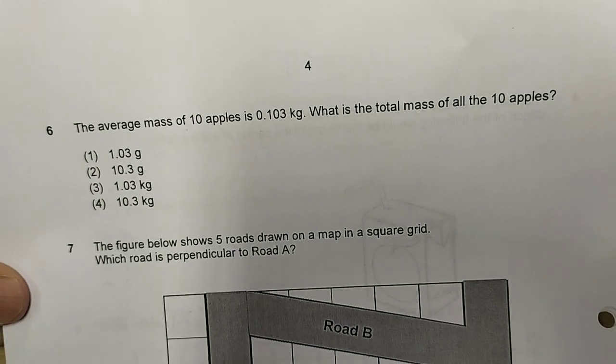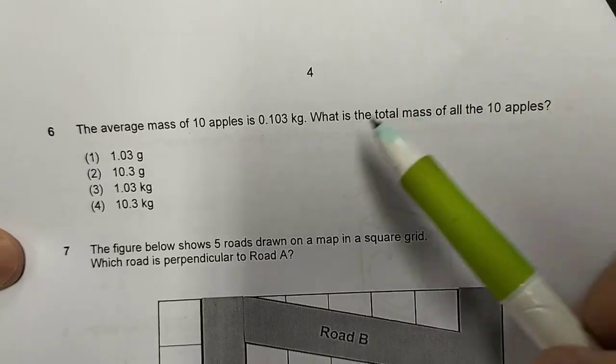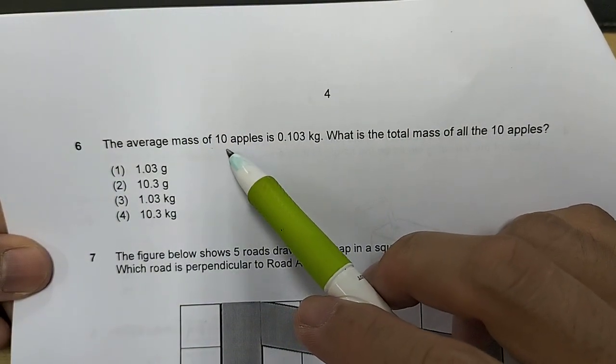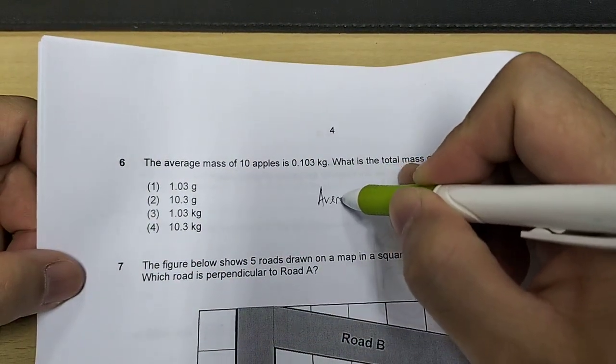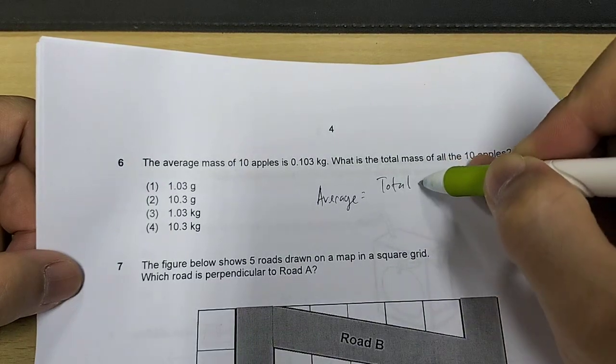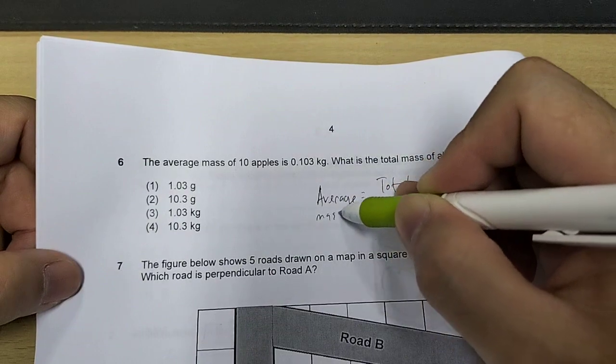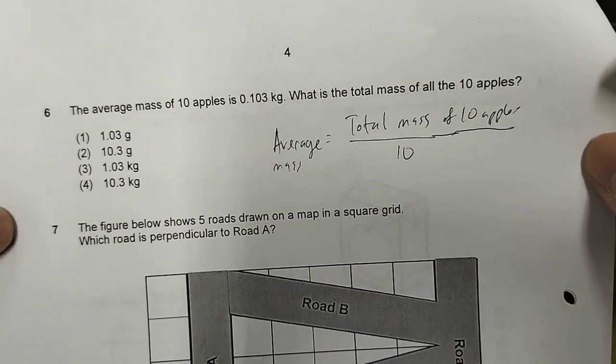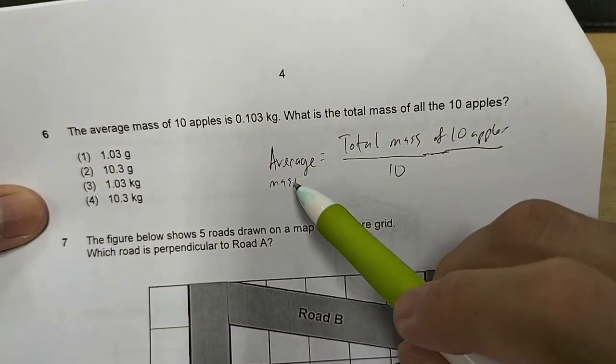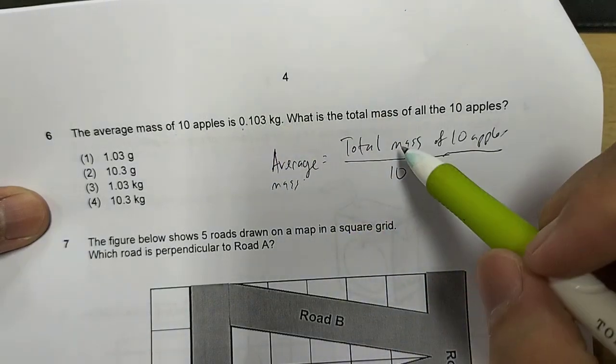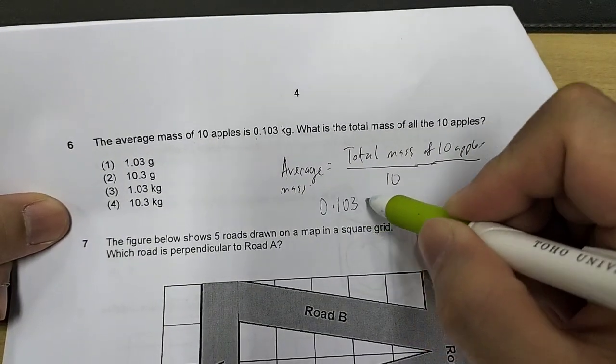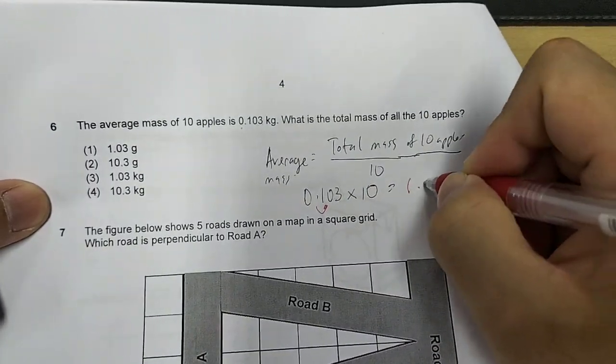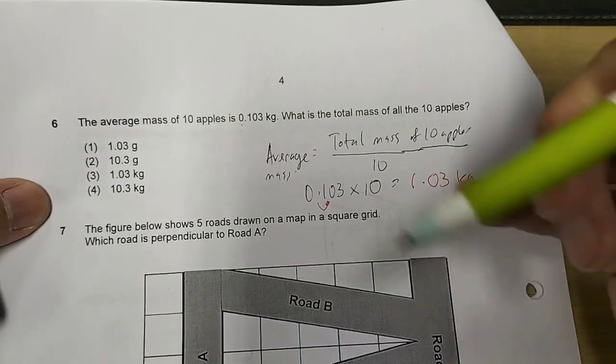Question 6. The average mass of 10 apples is 0.103 kg. What is the total mass of all the 10 apples? Now, average means that if you add up all the mass of the 10 apples and divided by 10, you get this. Let's look at the formula. So average mass is total mass of the 10 apples divided by 10 because there are 10 apples here.